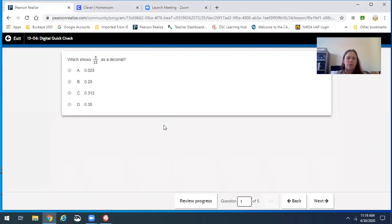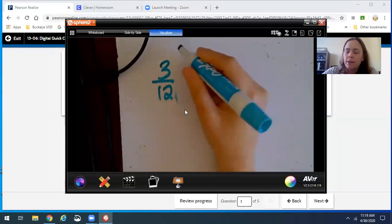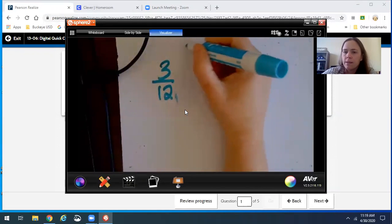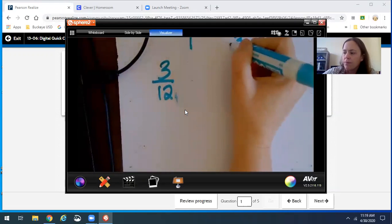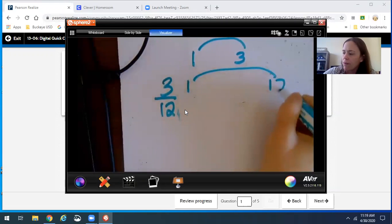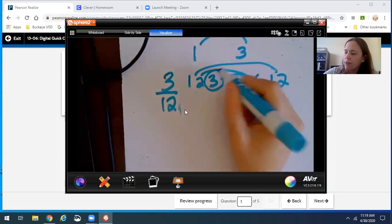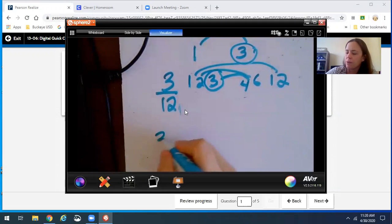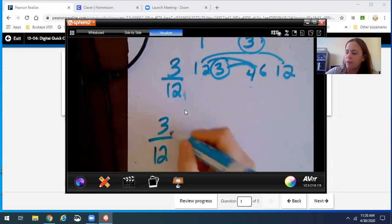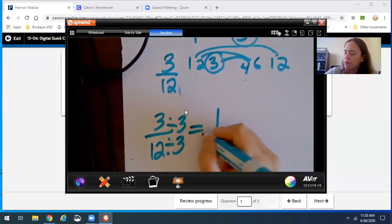So here's the first one, 3 twelfths as a decimal, and I'm going to use this document camera. So what I would do first is put this into simplest form, that makes it the easiest. If you don't remember rainbow factoring, 1 times 3, then we could do 1 times 12, 2 times 6, 3 times 4. So what I'm going to do here is I see they both have a 3, so I'm going to take 3 twelfths and I'm going to divide them both by 3, so we're using all of your skills, and that equals 1 fourth.